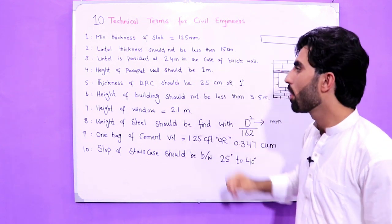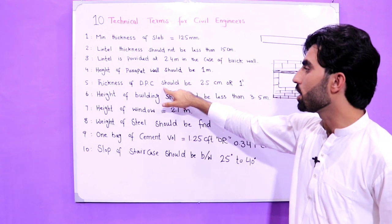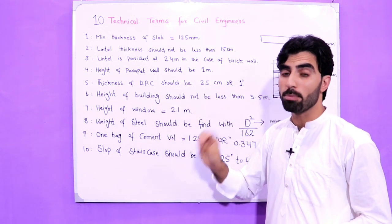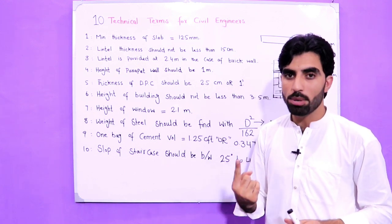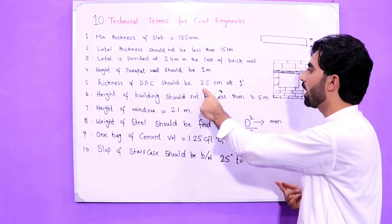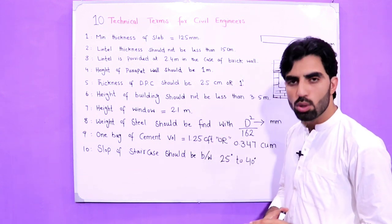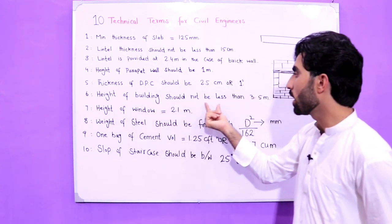The fifth technical term is thickness of DPC, damp proof course, should be 2.5 centimeters. It should not be less than 2.5 centimeters or 1 inch, because in 1 inch we have 2.5 centimeters. So thickness of DPC should be 2.5 centimeters.